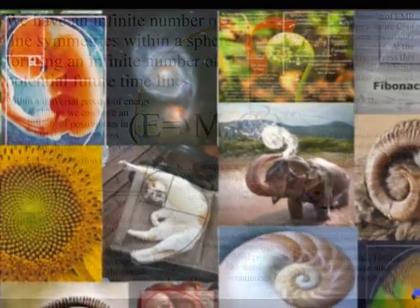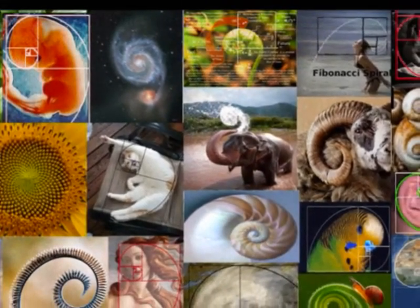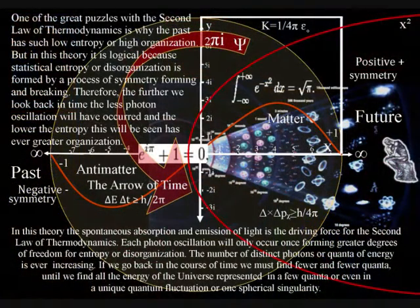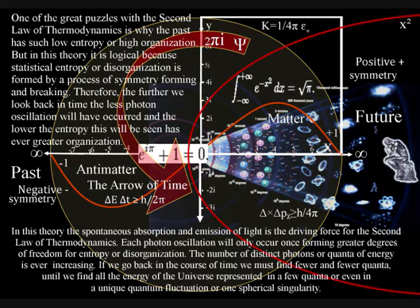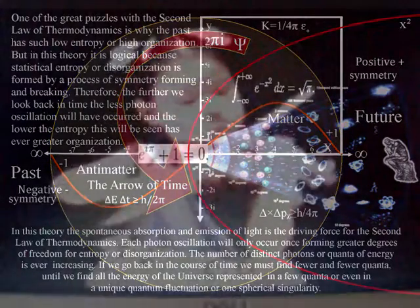Such a theory can also explain why we seem to have such low entropy, or high organization, at the beginning of time, or what has been called the Big Bang. It is because the further we look back in time, the less photon oscillations will have occurred, therefore the less potential there was for disorganization, and the greater the symmetry.